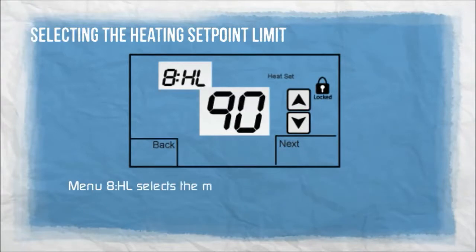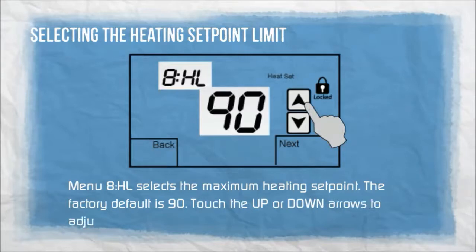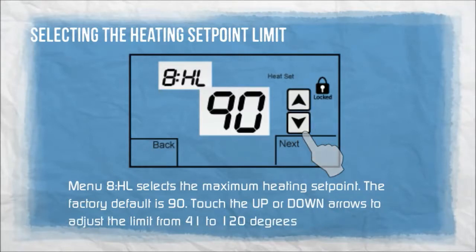Menu 8HL selects the maximum heating set point. The factory default is 90. Touch the up or down arrows to adjust the limit from 41 to 120 degrees Fahrenheit.